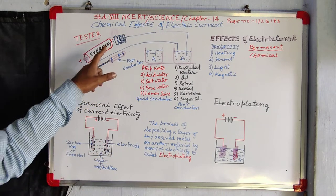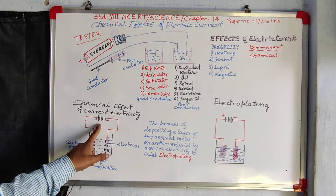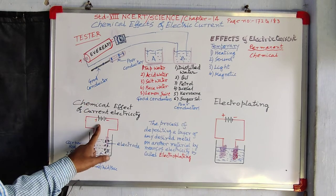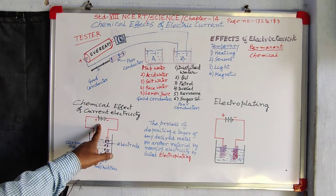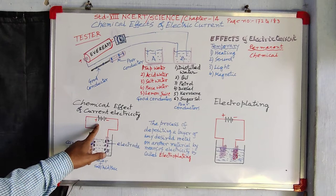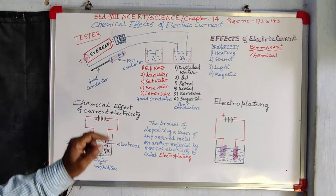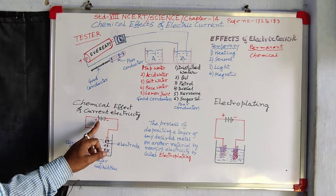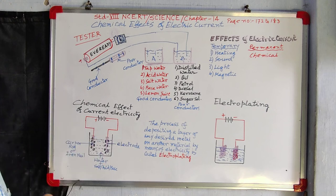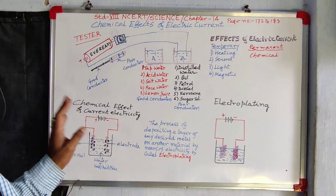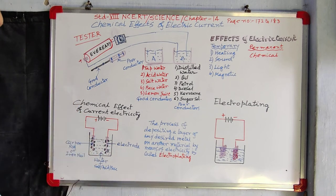The battery symbol: the positive end is a bigger vertical line and the negative end is a smaller vertical line. Three cells combined together — so I call it a battery.